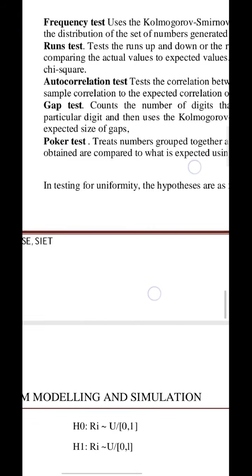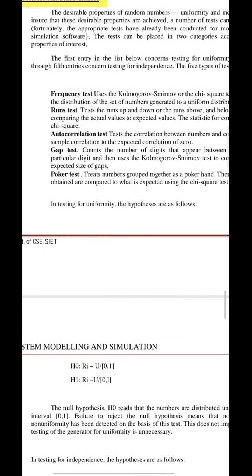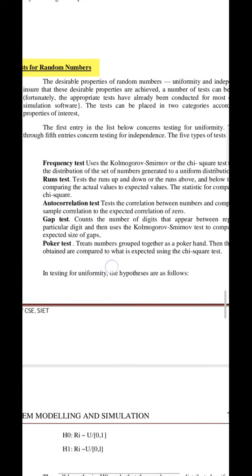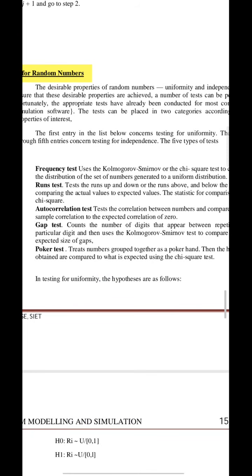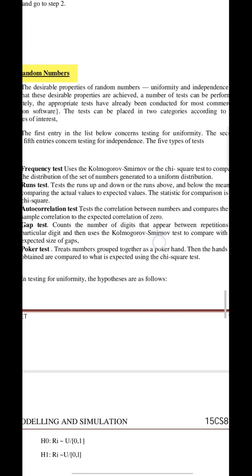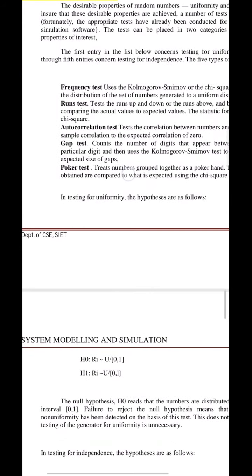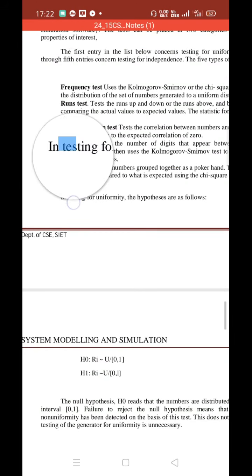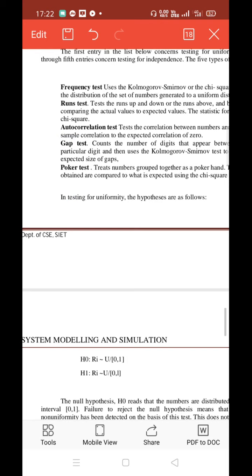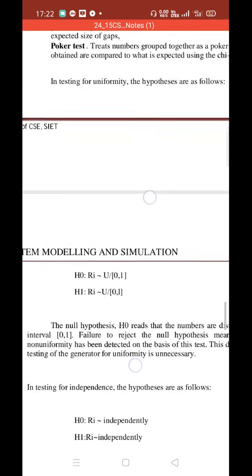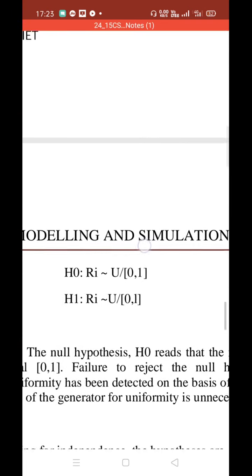Go through this: these are the 5 categories. The first four belong to testing for uniformity and the fifth one is used for testing independence — please understand that. In testing for uniformity, the hypotheses used are as follows.